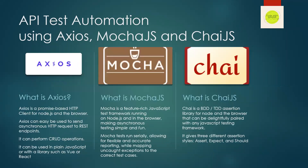Before we get into creating the automation framework, let's first know what is Axios. Axios is a promise-based HTTP client for Node.js and the browser. Axios can be used to send asynchronous HTTP requests to REST endpoints. It can perform CRUD operations. It can be used in plain JavaScript or with a library such as Vue or ReactJS.